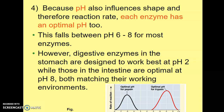However, we do have some specific enzymes — one being the digestive enzymes in our stomach that are designed to work at a pH of 2, so that it's a very acidic environment to break down the food. And we also have particular enzymes within the intestine that are optimal at a pH of 8.